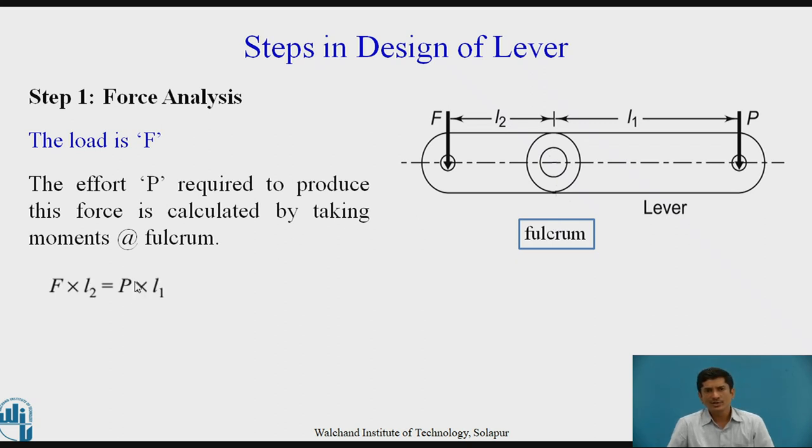We can use the equation F times L2 equals P times L1. We can use this and calculate the required force. The required force is P which is equal to F multiplied by L2 by L1. L2 by L1 are the dimensions of the lever. This is the first type of lever.